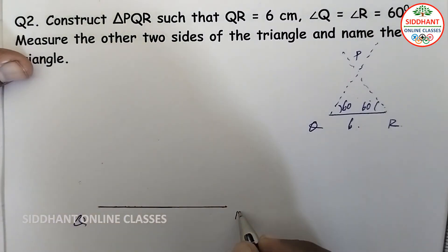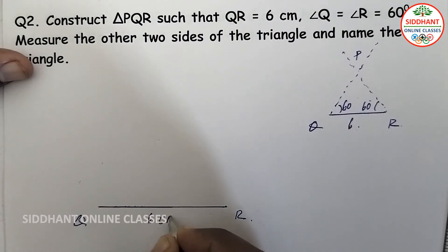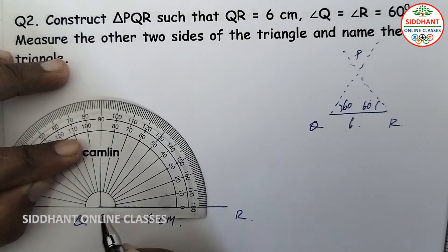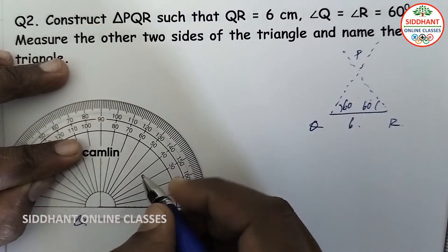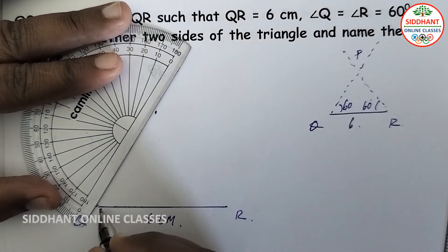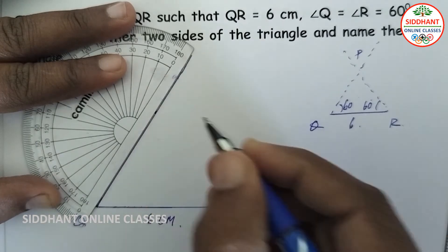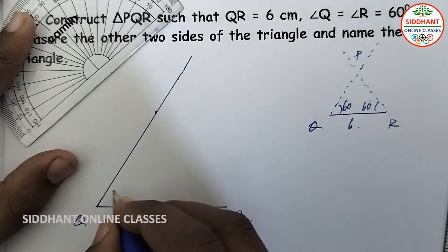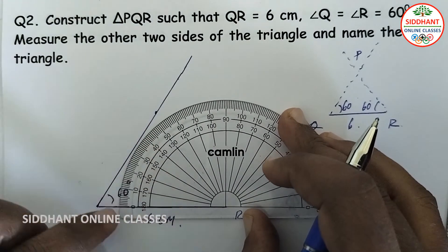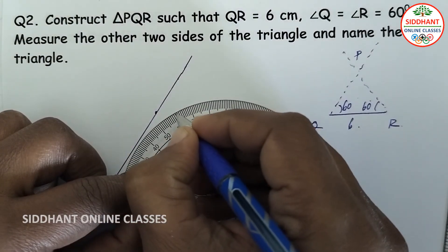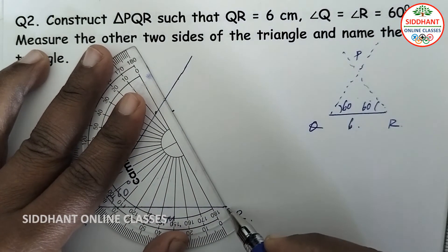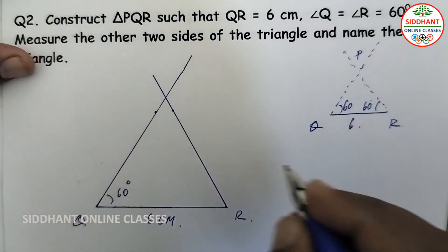Now we construct this triangle. Take the scale and draw 6 centimeters — this is Q and this is R. Place the protractor at Q and measure 60 degrees, mark that point and extend the line from Q. Then place the protractor at point R and measure 60 degrees, mark that point and extend the line. We join these lines to find the intersection point P.